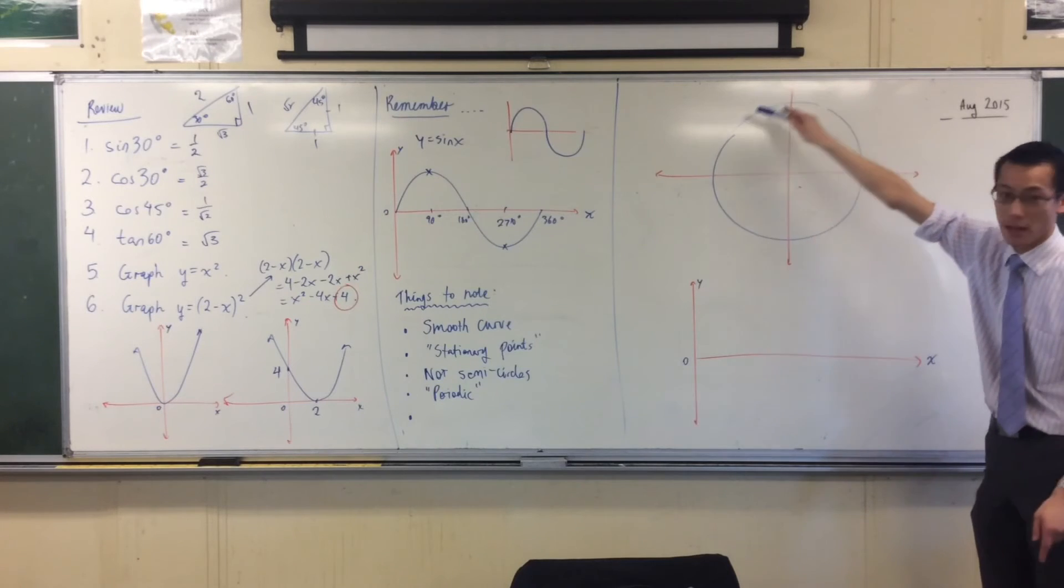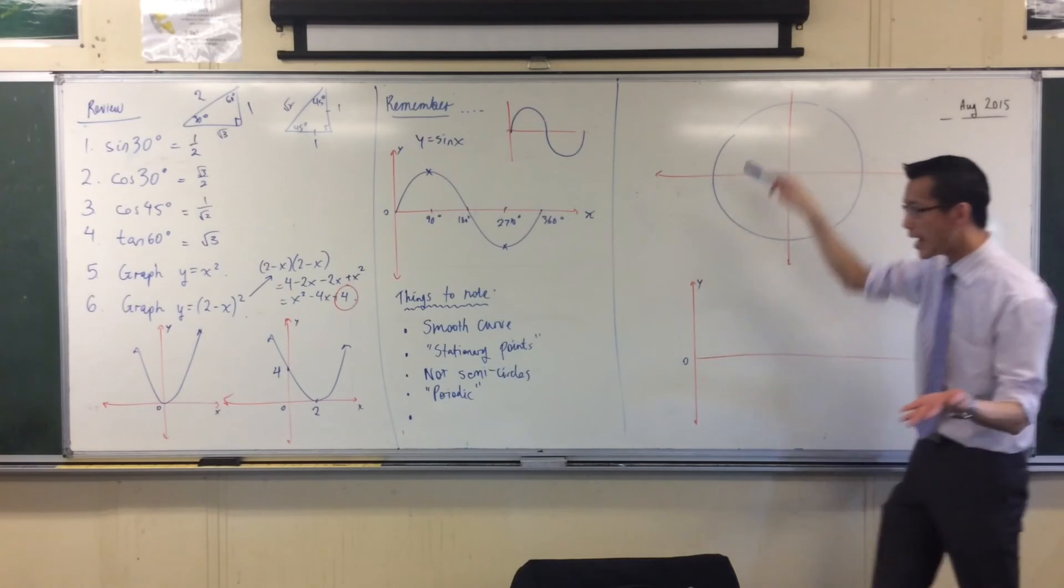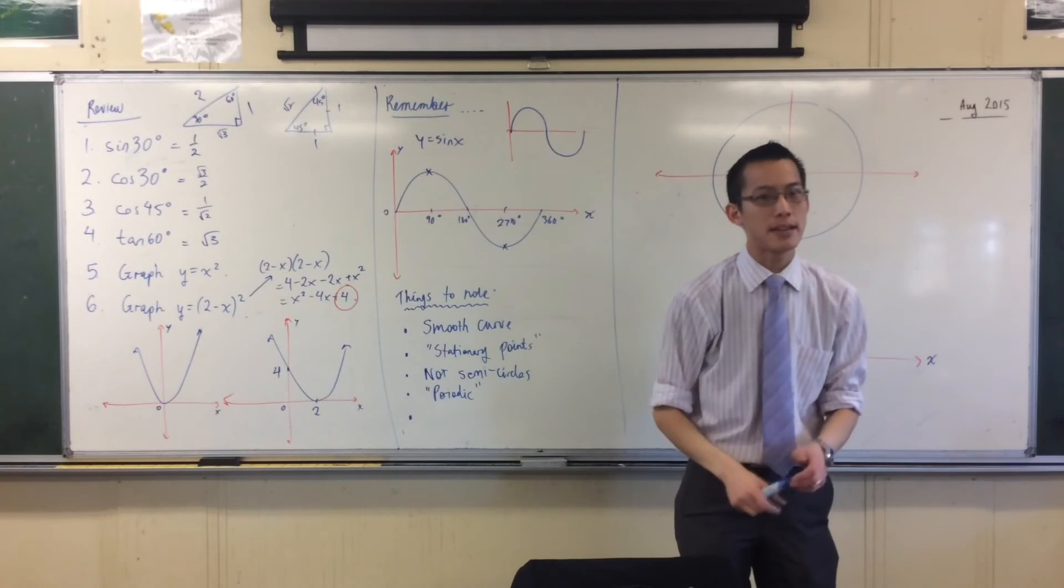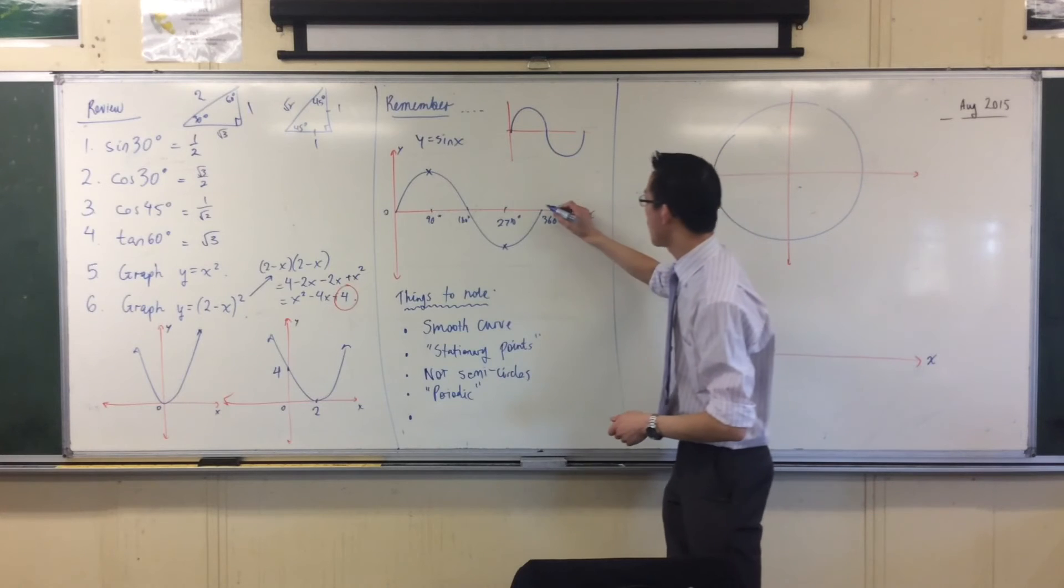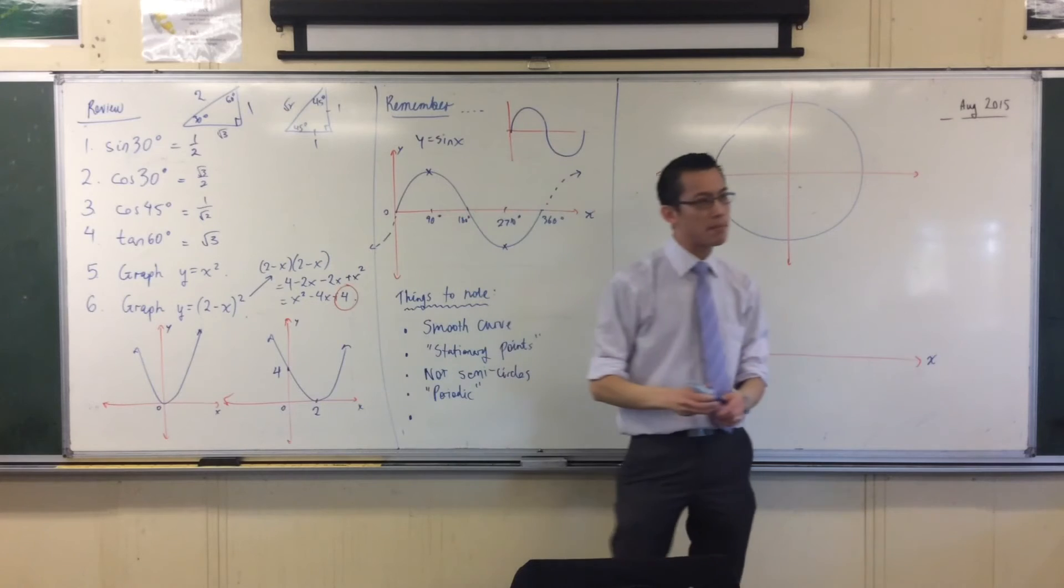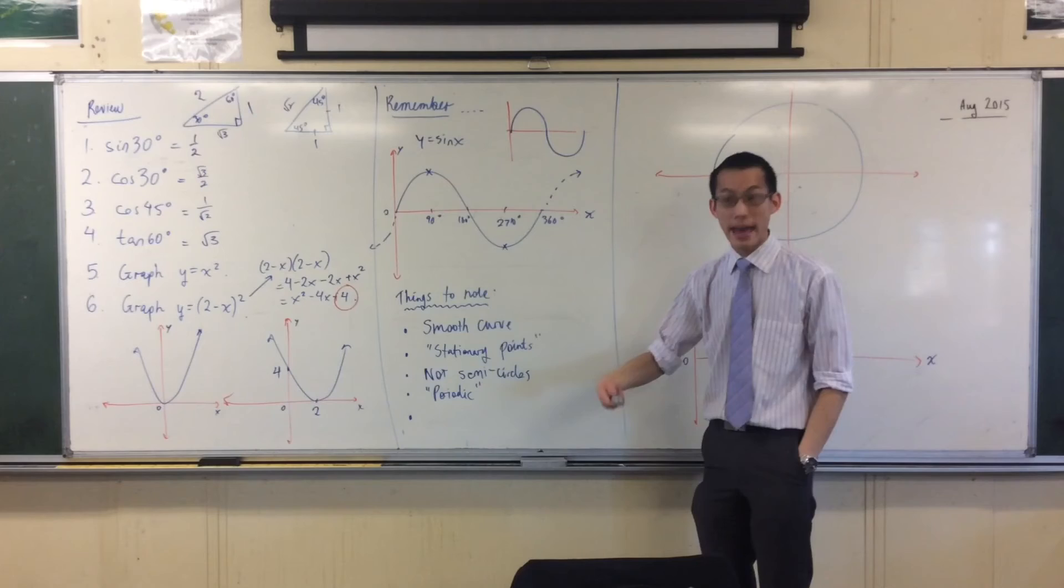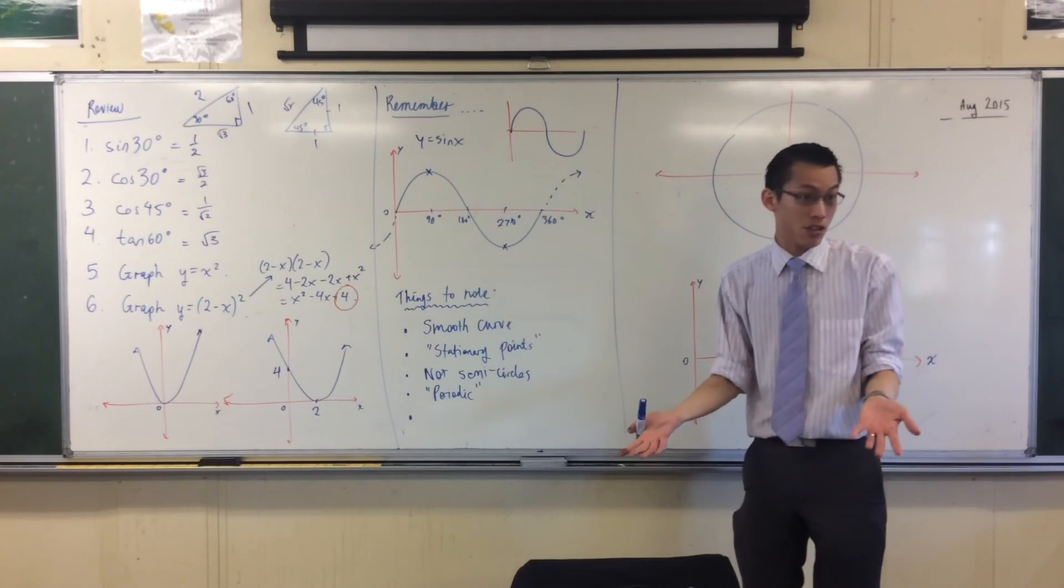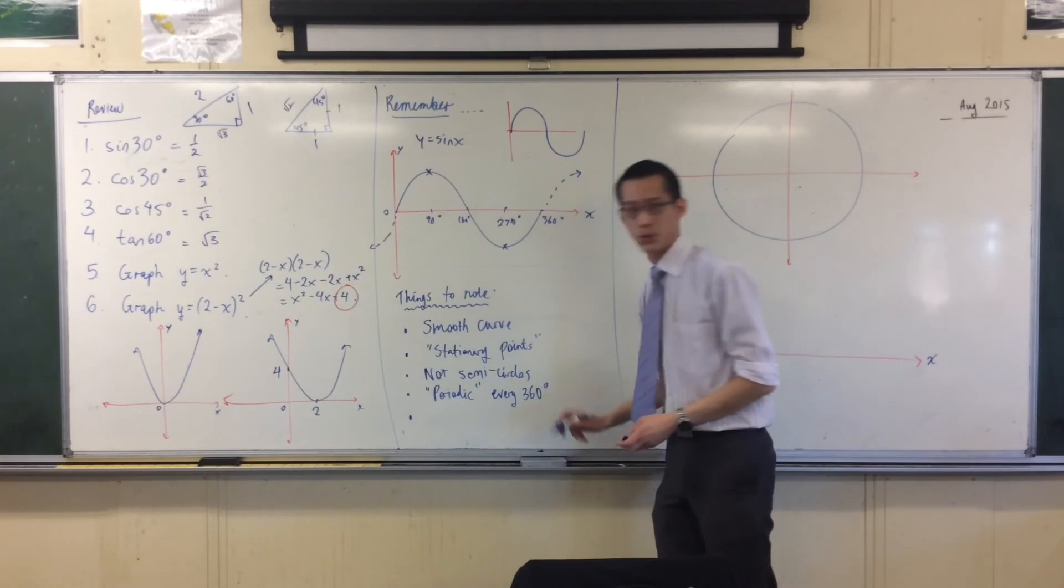So you're going to get the same values again and again and again and again, they repeat. So on your graph, all I've drawn is 0 to 360, but in fact, it continues. It continues in both directions forever. That's what we mean by it's periodic, it's repetitive, and it repeats every 360 degrees, because that's how many degrees there are in a circle. So it's periodic every 360 degrees.